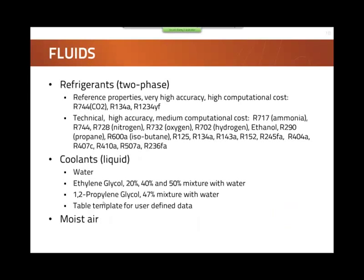There is a wide range of fluids supported by this library. For refrigerants, besides those typical for air conditioning applications like R134A, there is the newer refrigerant R1234YF and CO2. There are many more typically used in household refrigeration, supermarket refrigeration, or heat pumps. On the coolant side — single-phase liquid — we have ethylene glycol-water mixtures, pure water, and propylene glycol mixtures, and you can also specify your own medium. Moist air is used on the air side, so humidity and condensation in evaporators are always taken into account.